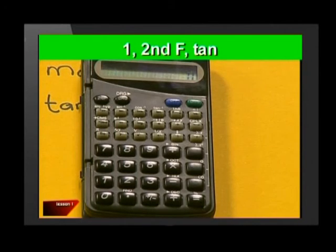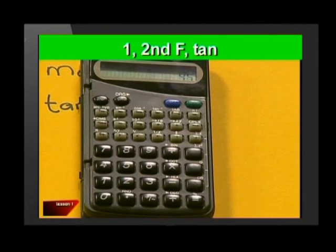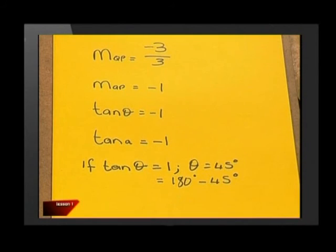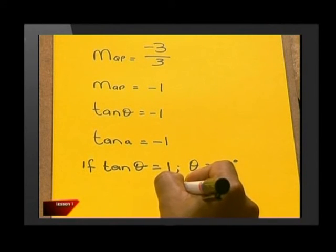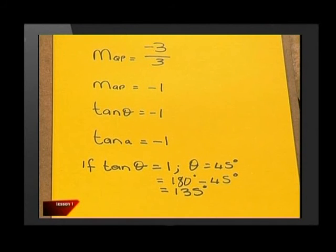Okay, so I take the inverse of tan of 1 on my calculator and I get 45. The obtuse angle we want is 180 degrees minus 45 degrees, which is 135 degrees. So the angle of inclination is 135 degrees. And we can check this by measuring with a protractor.